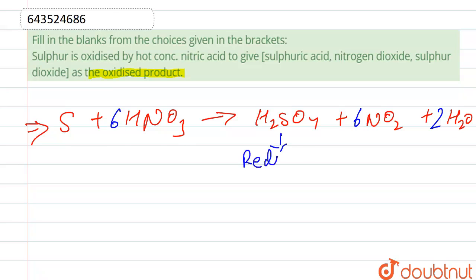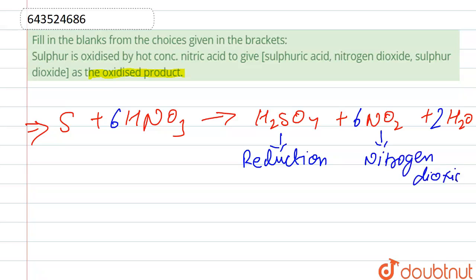Here, reduction takes place, and here oxidation takes place. So the oxidized product is nitrogen dioxide. Our answer is nitrogen dioxide. Thank you.